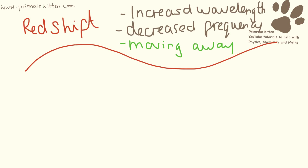So with red shift, the waves are going to be stretched out. You're going to see an increased wavelength and a decreased frequency. It's called red shift because the light is shifting to the red end of the spectrum, and that is moving away from us.